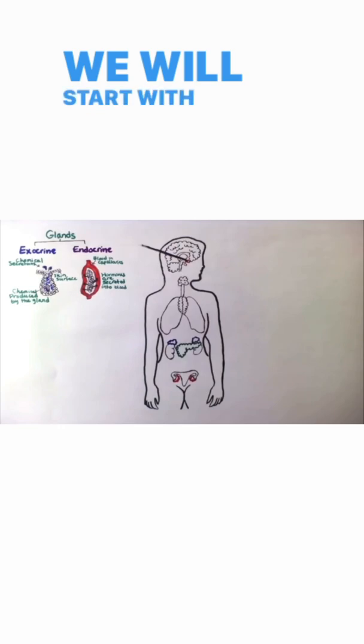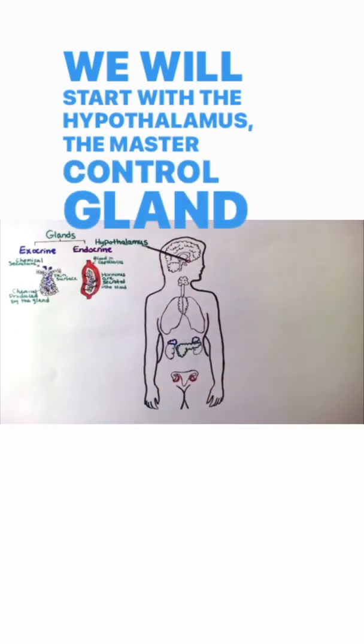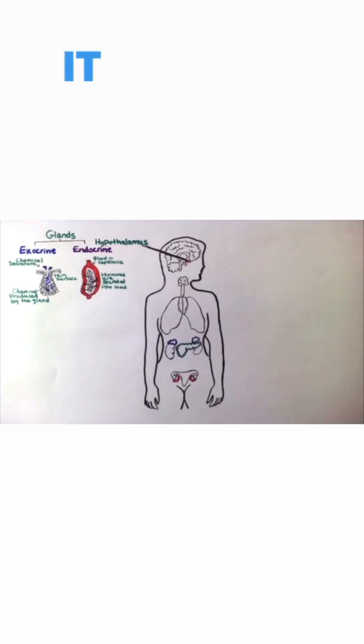We will start with the hypothalamus, the master control gland in the brain. It is located in the forebrain, directly above the pituitary gland.